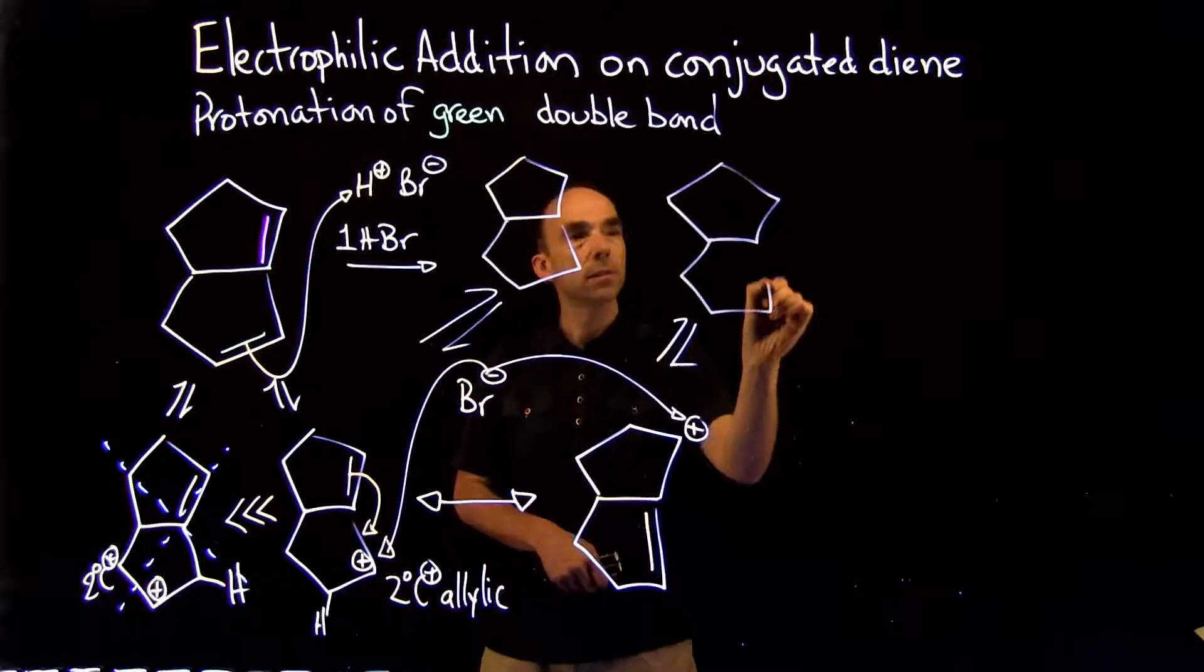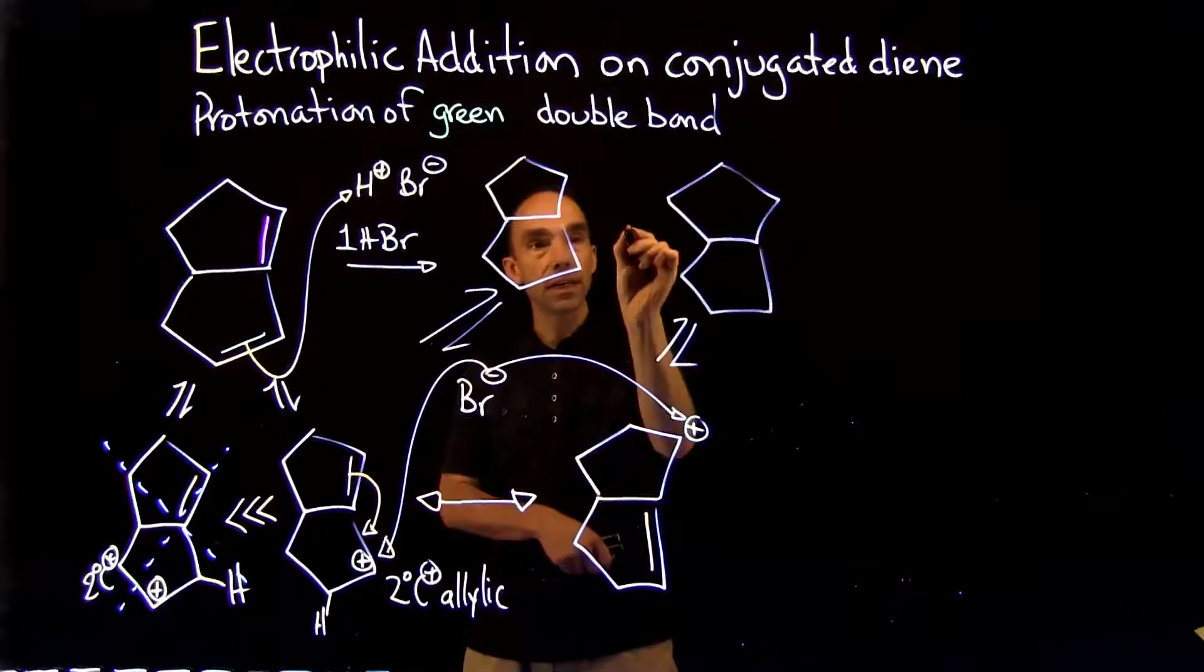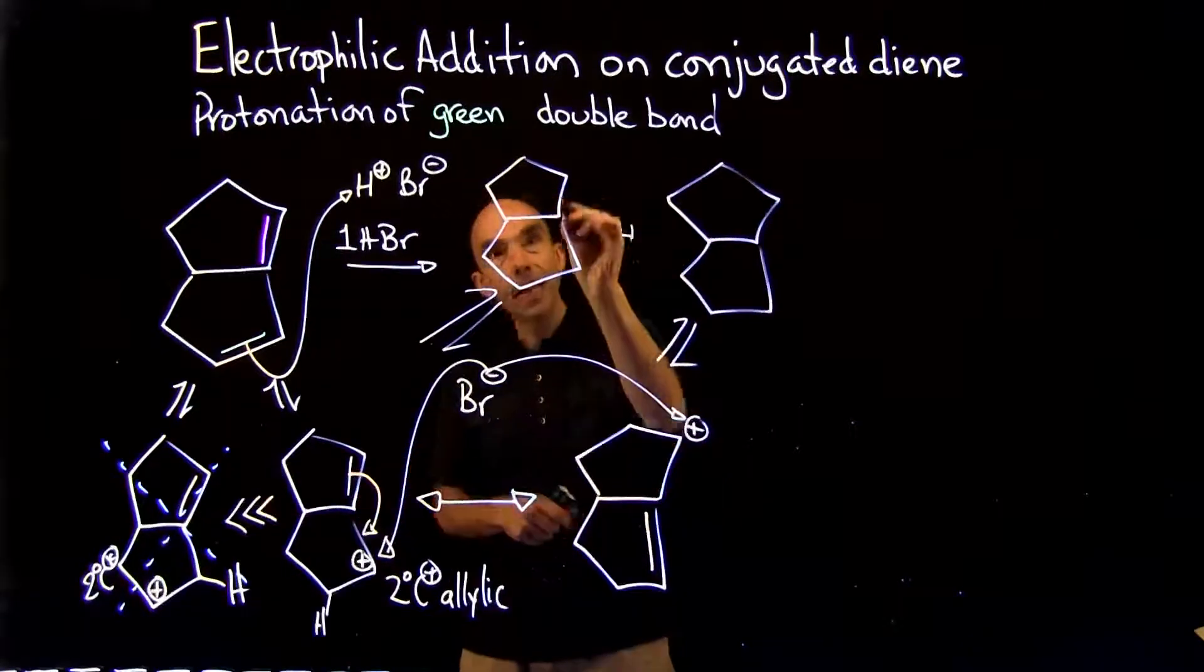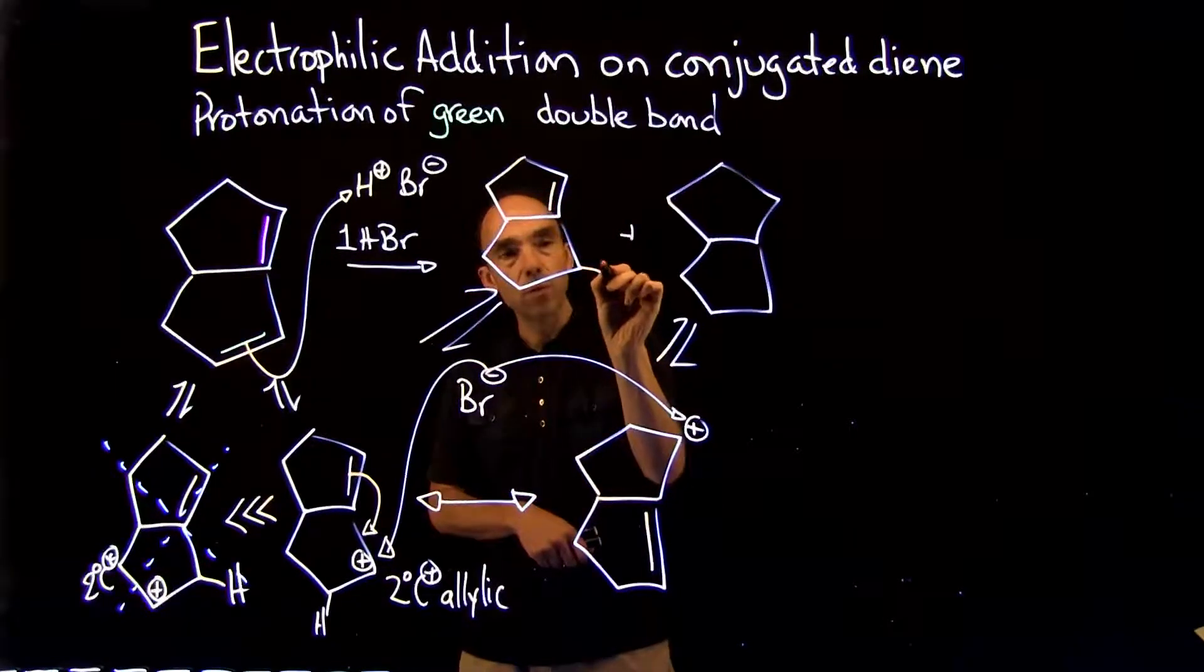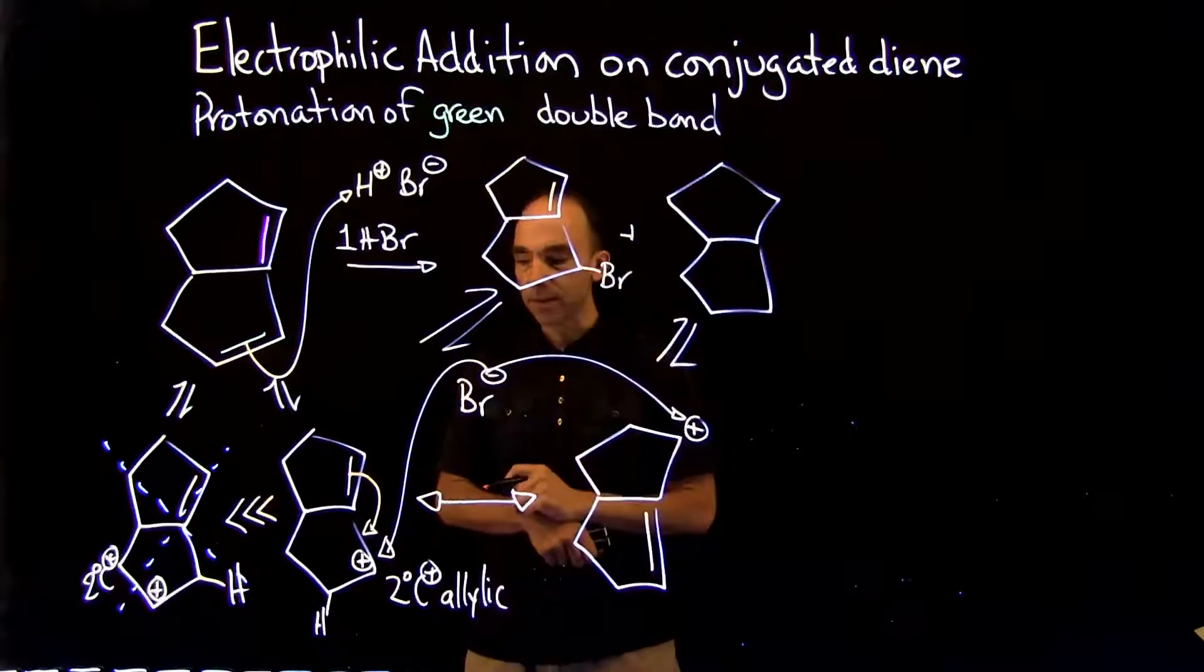So both products will have the same carbon architecture. In this case, the double bond remains there, and we have bromine at this position.